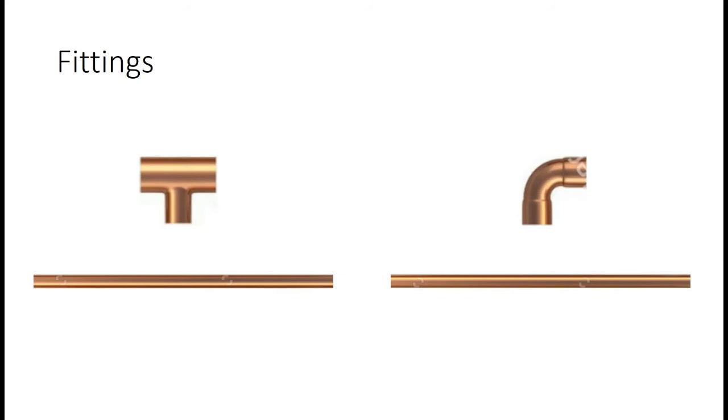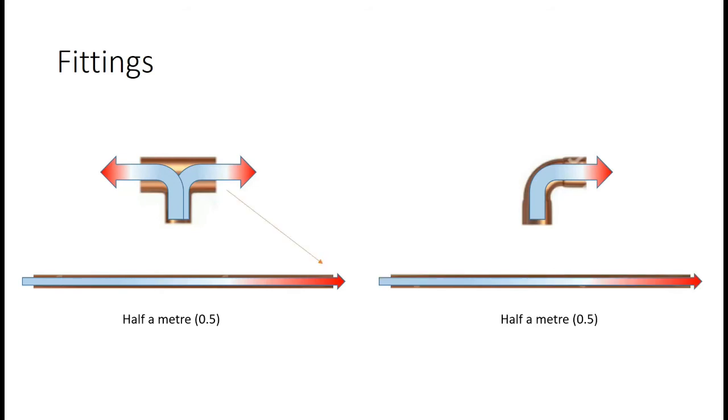In all gas systems, we have fittings and they usually take the form of T pieces, which split the gas, or elbows, which turn the gas by 90 degrees. Both of these turn the gas very sharply. And when they turn it, they take away energy from it and they reduce the pressure. Now they reduce the pressure by an equivalent of half a metre of straight pipe.